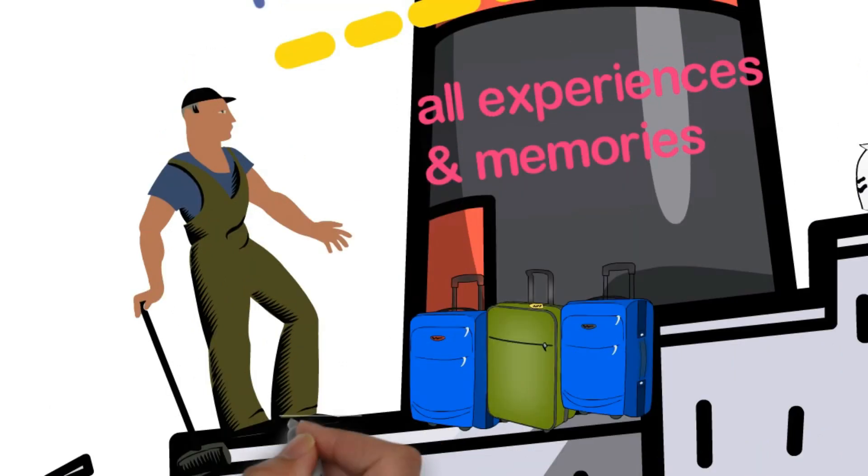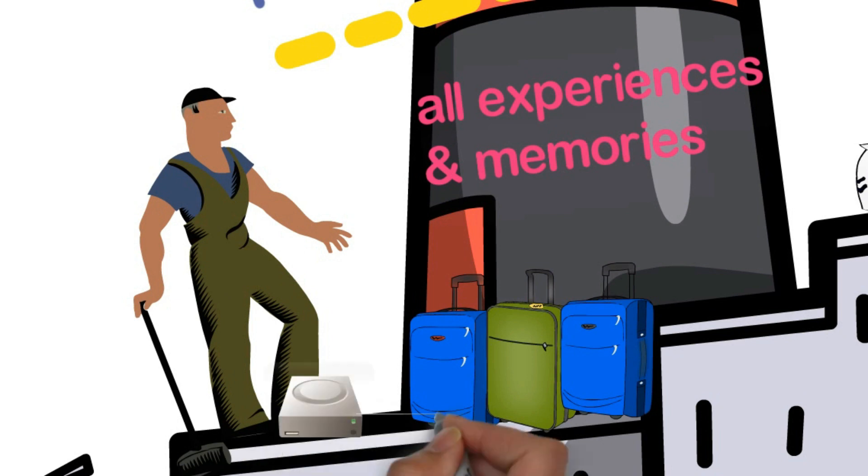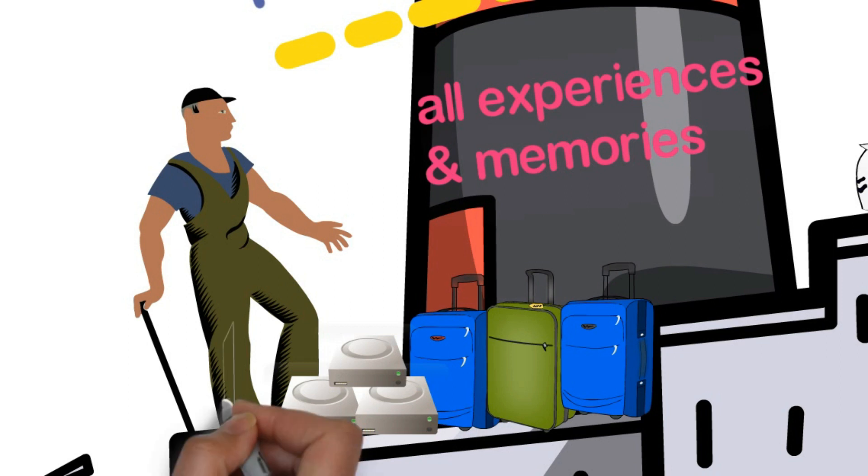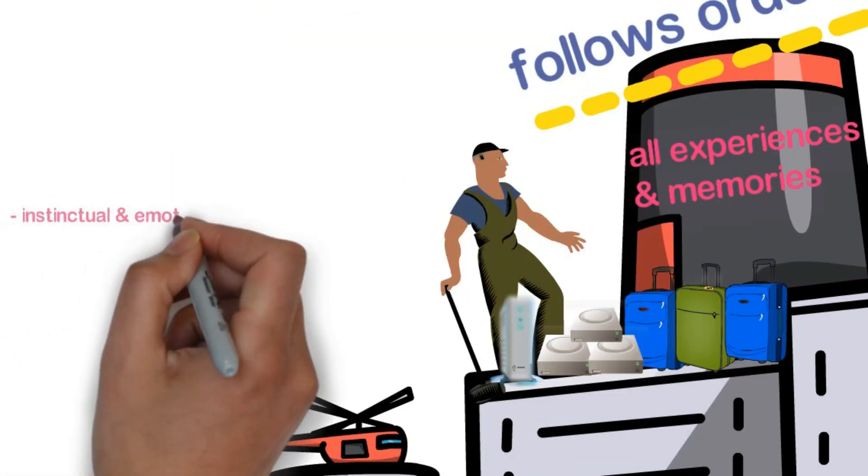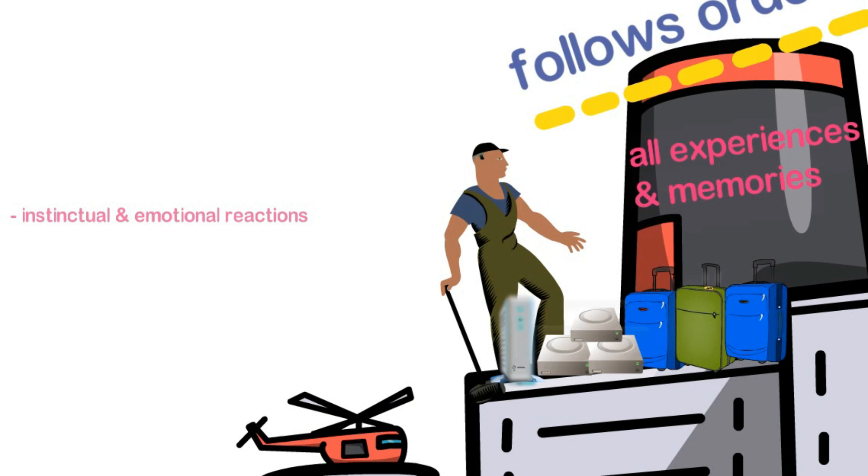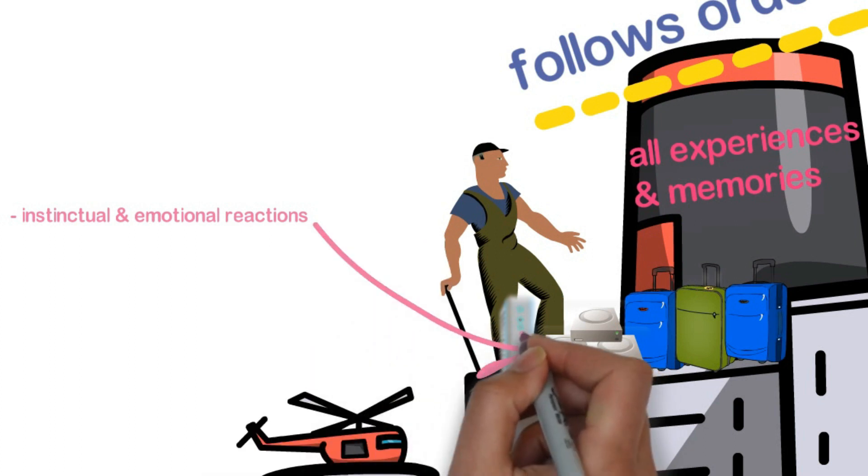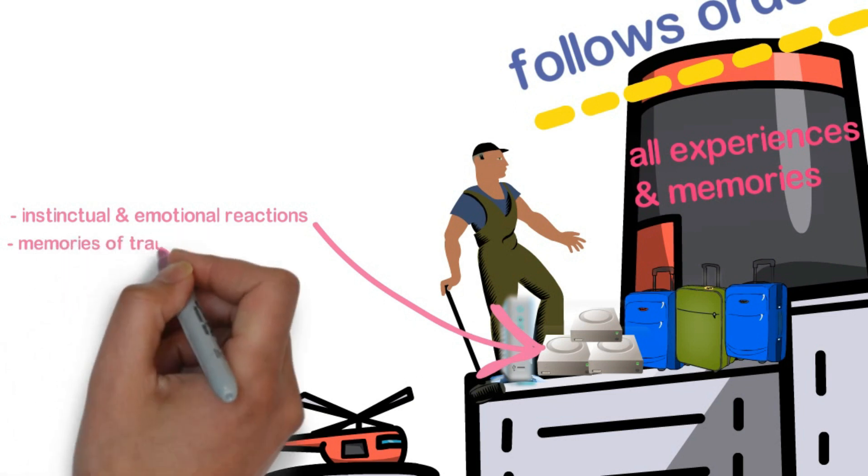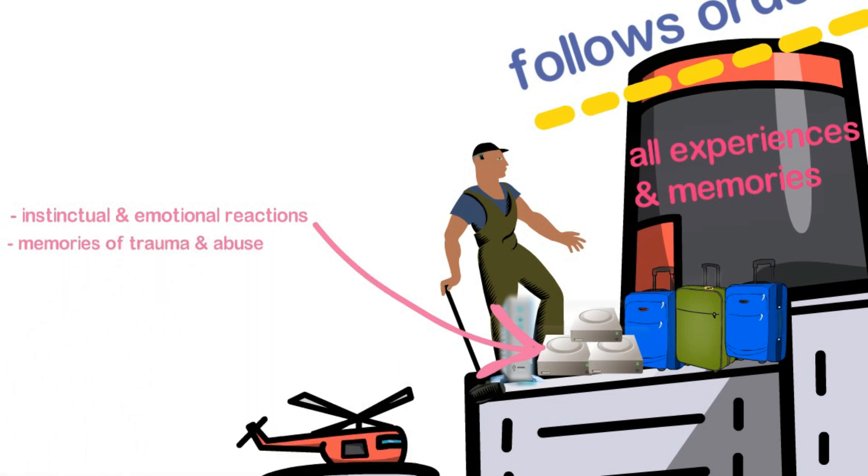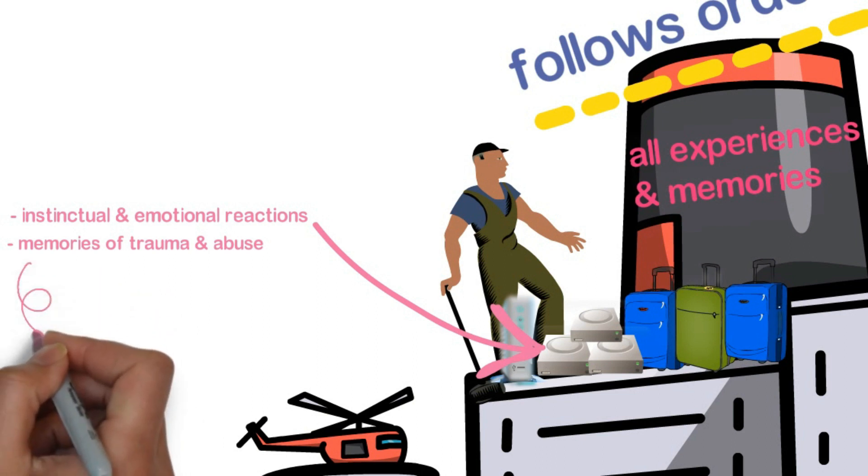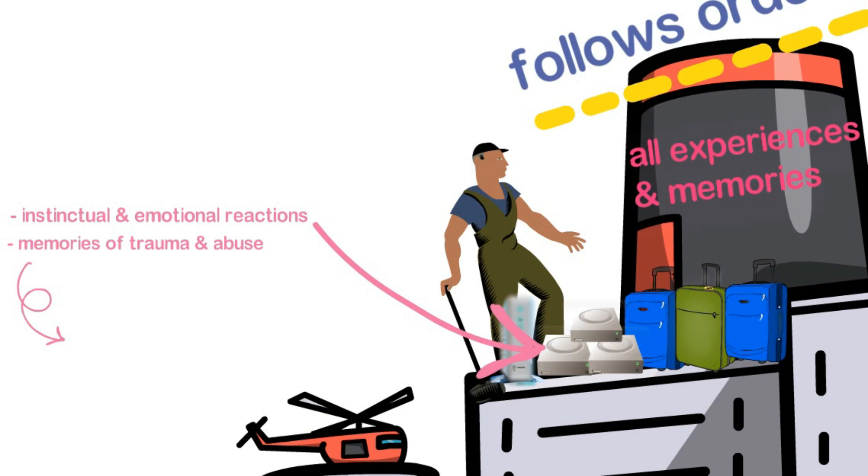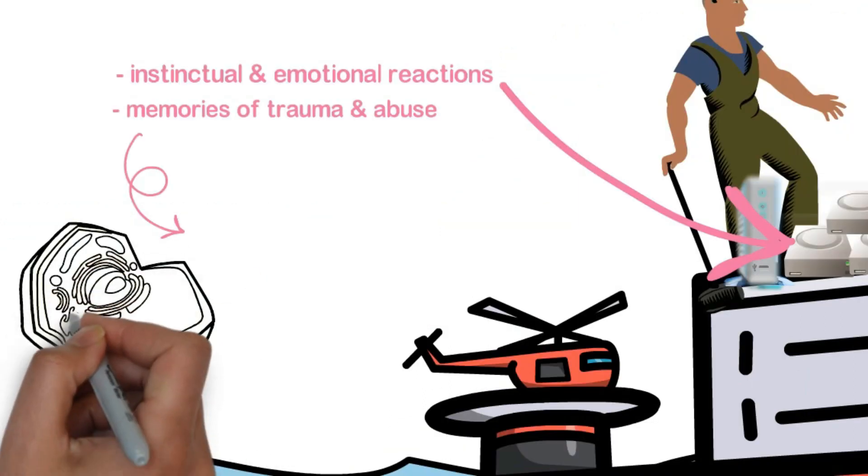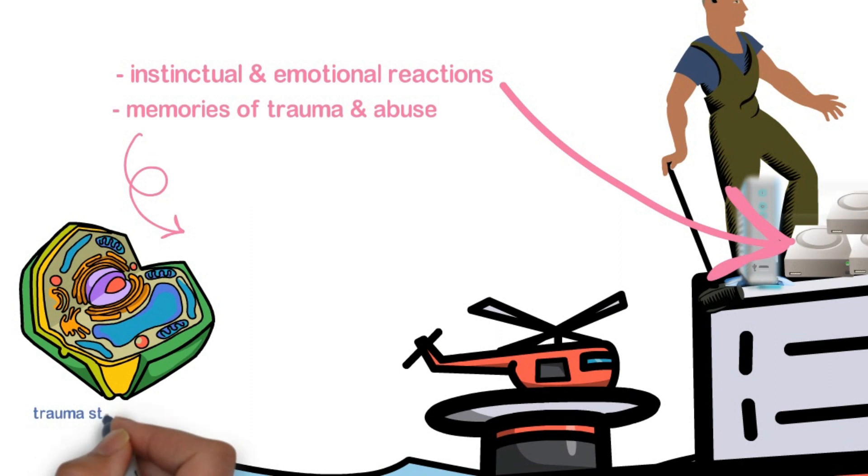If you were to open these bags, you would find hard disks that store trillions of data bytes. All your feelings, your instinctual, your emotional reactions, they come from information that is stored on these hard drives. Your past memories of trauma, of abuse are also stored here, even if you have totally forgotten them. Now through this guy, your subconscious mind, these painful memories are literally stored in the cells of your body.